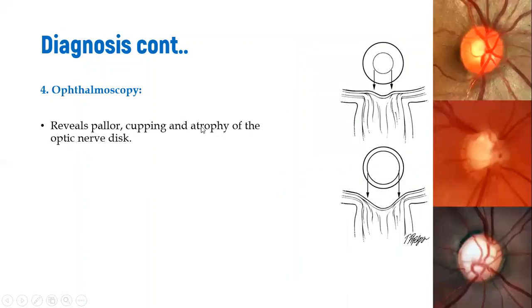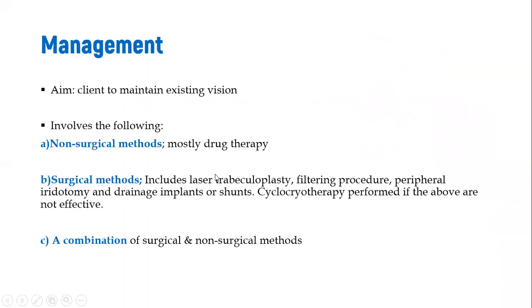Ophthalmoscopy uses an ophthalmoscope to visualize whether there is cupping at the optic disc — a depression formed by the pressure being applied there, which is a key sign of glaucoma.